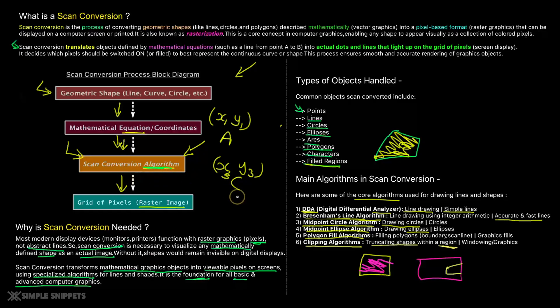So these are some basic algorithms which come under the scan conversion category. And all of these algorithms, as we discussed, are basically the foundation for all basic and advanced computer graphics. So don't take them lightly. These are serious algorithms, which are also implemented in modern day graphics. Of course, they are much more complicated. But when you understand these small or basic algorithms, you can build on to them and actually build some graphics and work on GUI based systems.